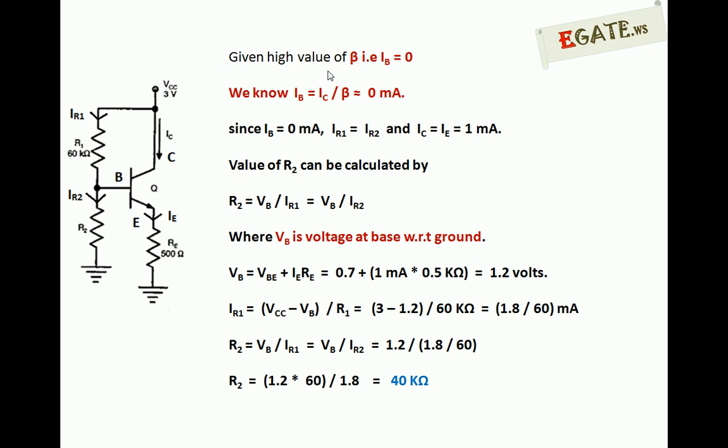Whenever IB equals zero, the conclusions we can get from this circuit are: IA equals IB plus IC, but IB is neglected, so IA equals IC, which equals 1 milliampere - this is the first conclusion. The current flowing through R1 resistor goes into base side as well as R2 side, but we can neglect the base current, so the current flowing into R1 also flows through R2 resistor. That is, IR1 equals IR2.